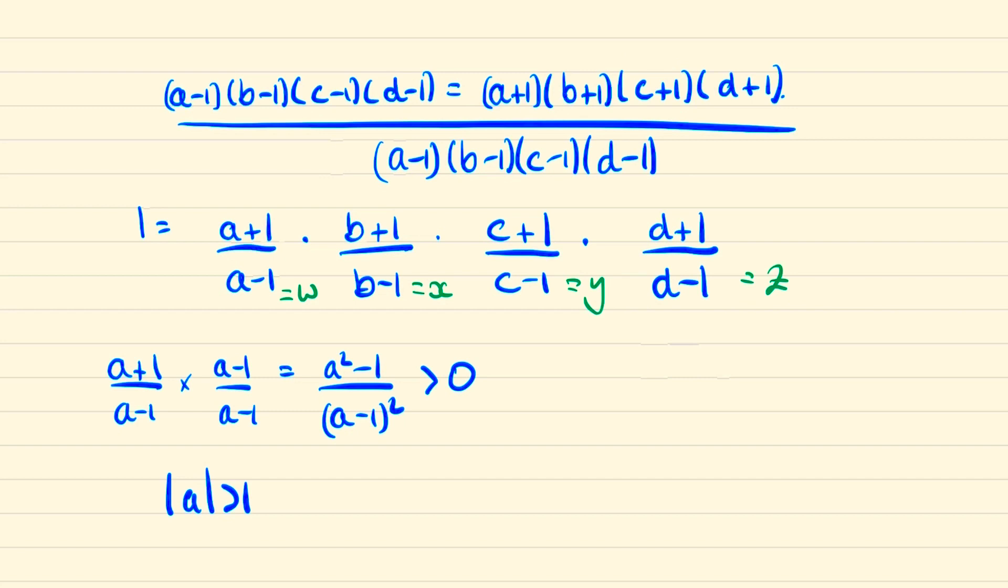The arithmetic mean is bigger than or equal to the geometric mean. The arithmetic mean of these four numbers will be w plus x plus y plus z all over four and the geometric mean is the fourth root of the product w x y z which we know is equal to one. And thus w plus x plus y plus z must be bigger than or equal to four.